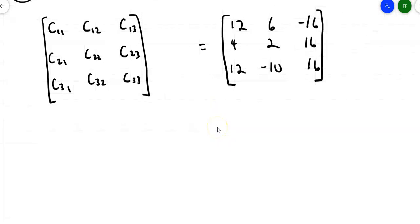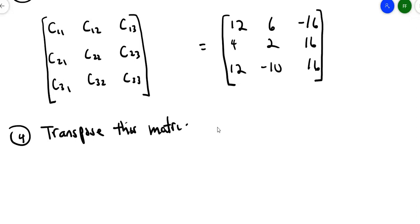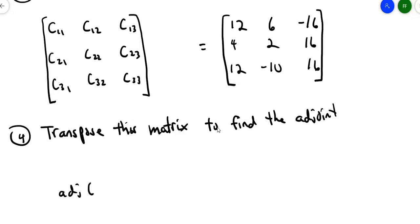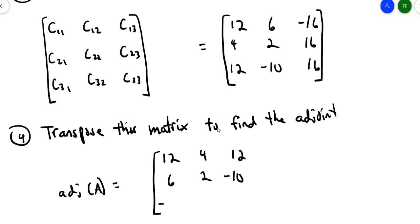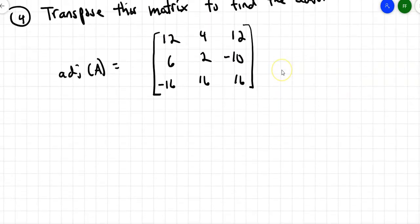Then to find the adjoint, transpose this matrix of cofactors. Taking the transpose, the adjoint of our original matrix A becomes [12, 4, 12; 6, 2, -10; -16, 16, 16]. The columns of the cofactor matrix become the rows of the adjoint. So if the question asks what is the adjoint, that's it.